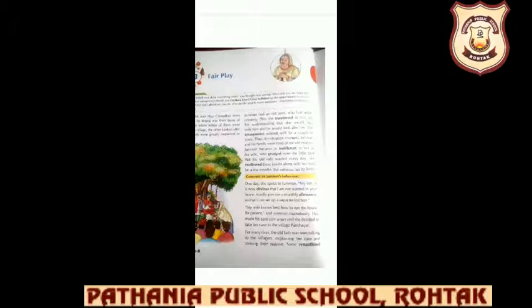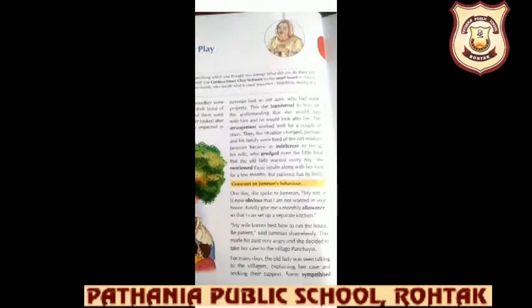Juman and his family were tired of the old relative. Juman became as indifferent to her as his wife, who begrudged even the little food that the old lady wanted every day. She swallowed these insults along with her food for a few months, but patience has its limits. Juman's wife is insulting her, but the old lady stays quiet for some months. Finally one day she loses her patience and decides she needs to do something for herself.